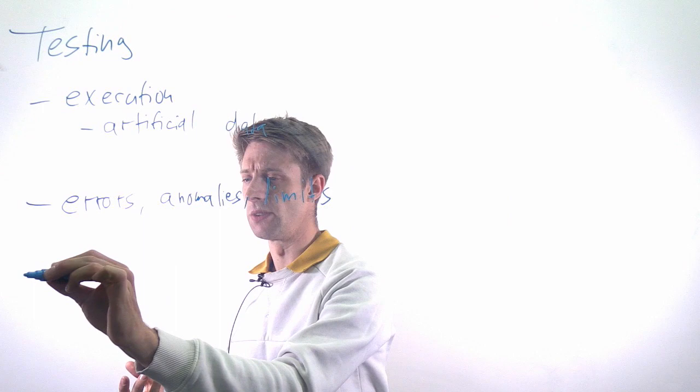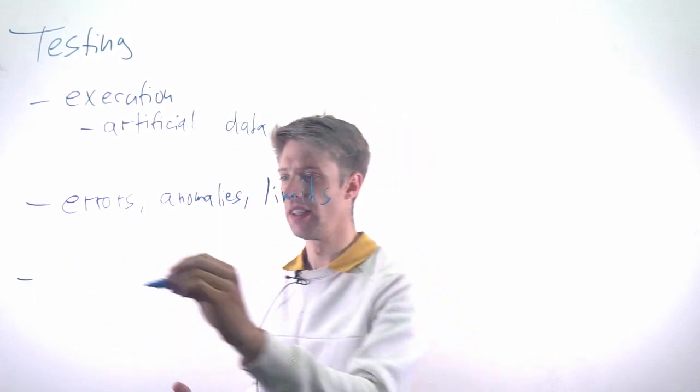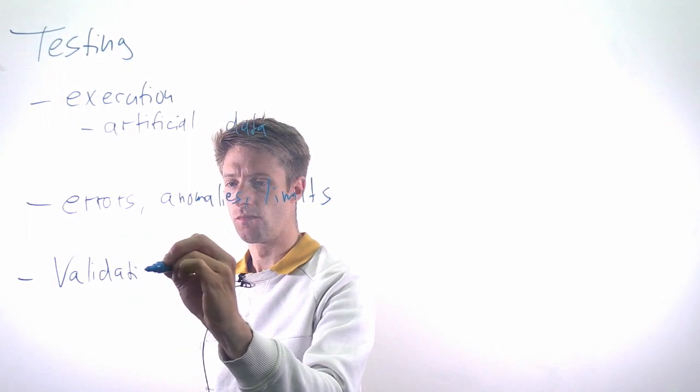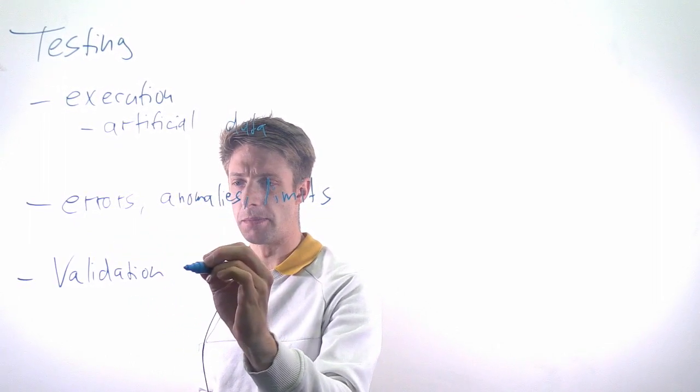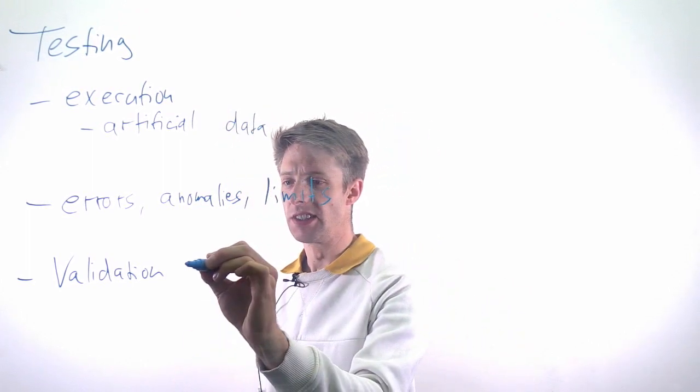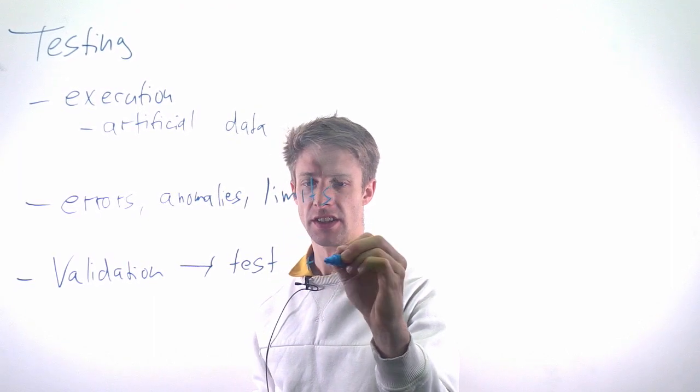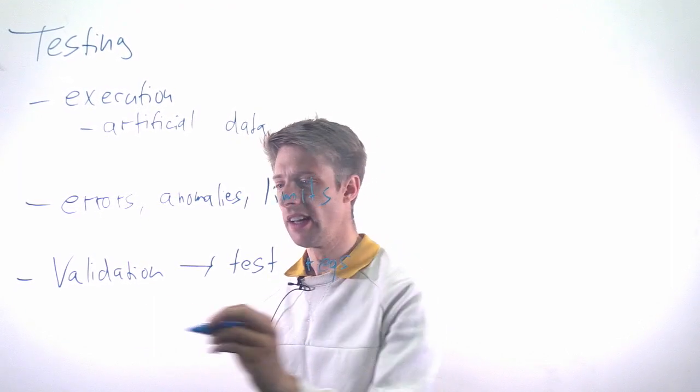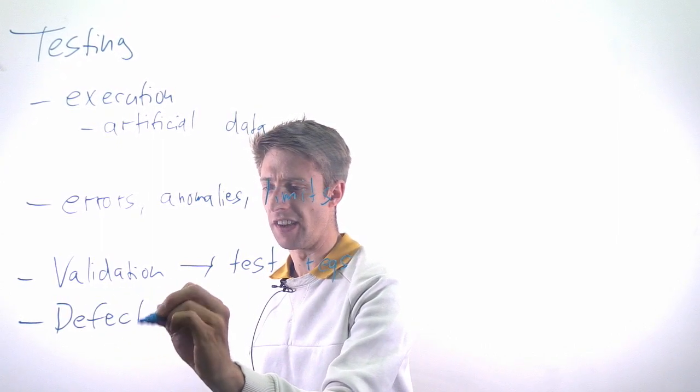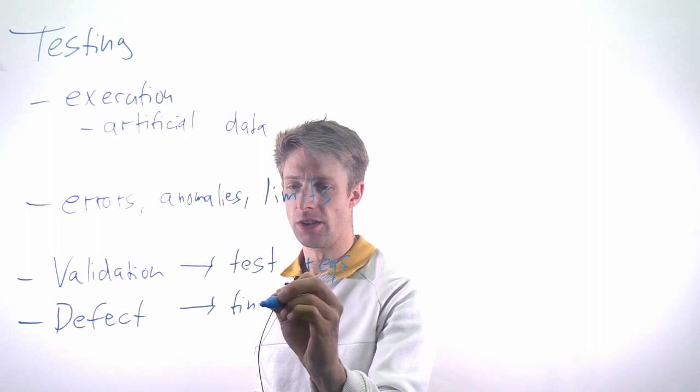Somerville distinguishes between two kinds of aims tests have. First is validation testing. Validation is about the requirements—are we building the right system? Basically, you write a test for each requirement. Then we have what he calls defect testing, where you find errors or bugs in the system.